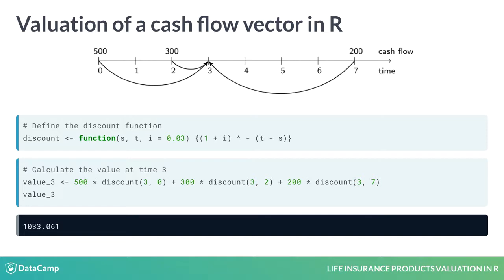The function returns 1 plus i raised to the negative time difference between t and s. Thus, when t is larger than s, the function discounts 1 euro at time t to time s. Using this function, you convert the cash flows in the timeline to time 3. With an interest rate of 3%, the value at time 3 is 1033 euro.